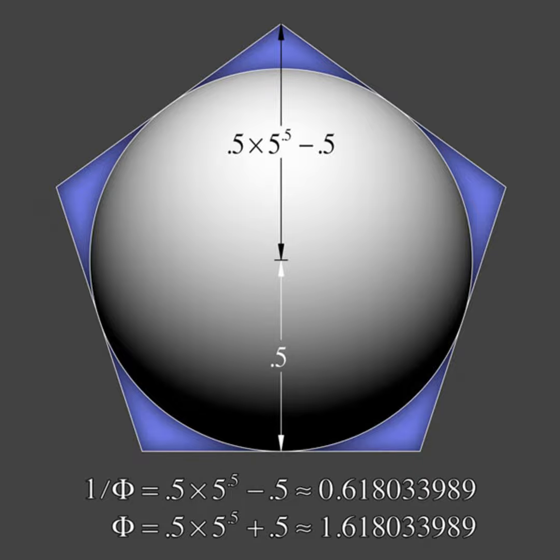This number is 0.5 or one half times five raised to the power of 0.5. If you raise something to the power of 0.5, it's equivalent to taking the square root of that number. So this could be read as one half times the square root of five minus 0.5.